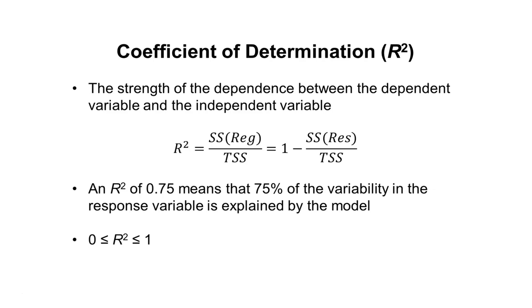If we already know what the regression sums of squares are and we already know what the total sums of squares are, we can calculate what the R squared value is.